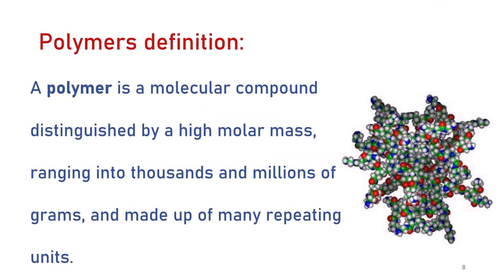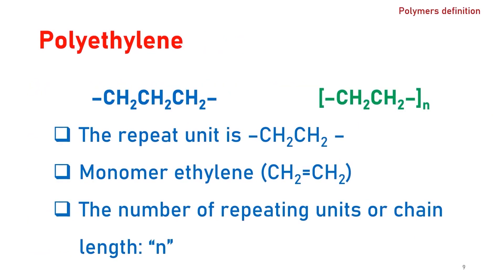So, what is the definition of a polymer? A polymer is a molecular compound distinguished by high molar mass, ranging between thousands to millions of grams, and made of many repeating units.